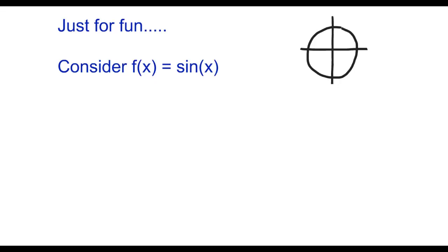What happens to sine of x as you move around and around and around in the circle? So as x is growing, as your angle is growing, even past 360, past 2π, past 3π, 4π, what's happening to sine of your angle?